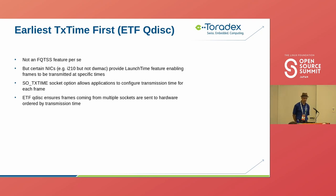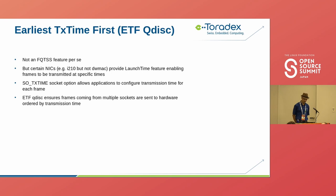Another qdisc is the earliest transmit time first, ETF. It's not an FQTSS feature per se, but certain Ethernet controllers — like the i210, but not the DWMAC — provide a launch time feature in hardware, allowing frames to be queued with a specific launch time. The ETF qdisc enables frames to be transmitted at a specific time, making use of this hardware feature. It maps the SO_TXTIME socket option, which allows the application to specify the transmission time for each frame, and ensures frames from multiple sockets are sent to hardware ordered by transmission time.